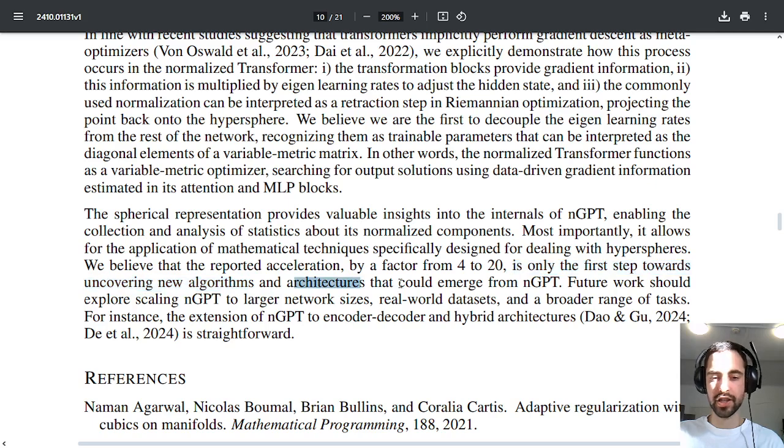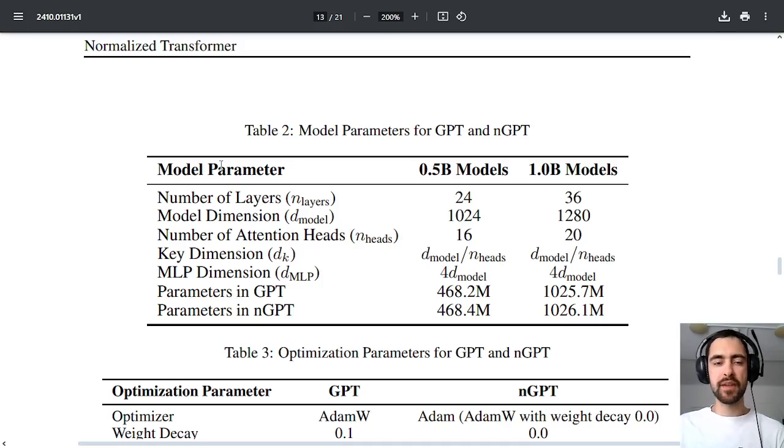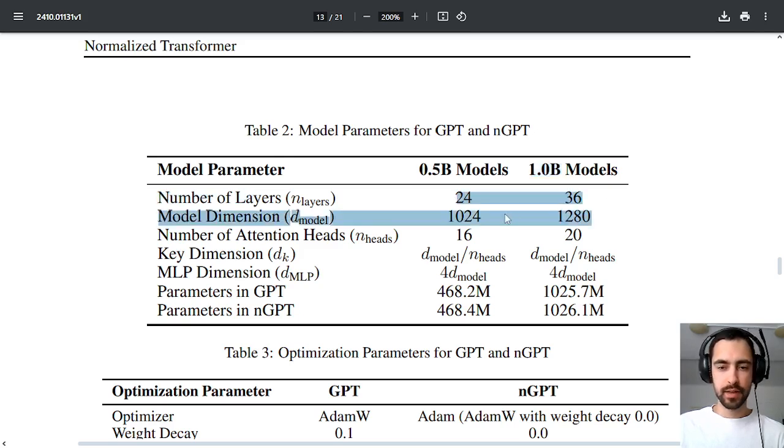Here we see parameters so for both GPT and nGPT 500 million models and 1 billion parameter model, so we got number of layers here, model dimensions, number of heads,